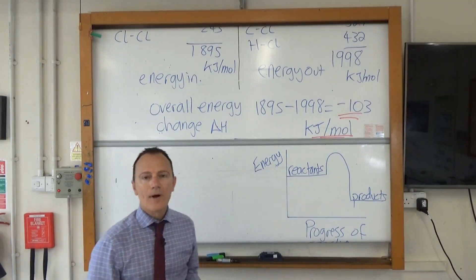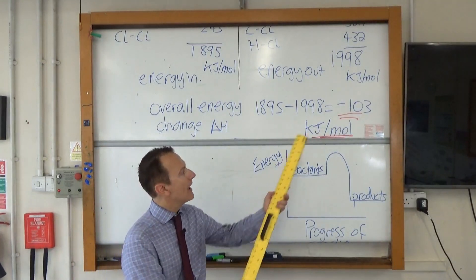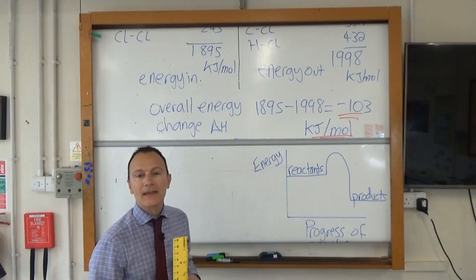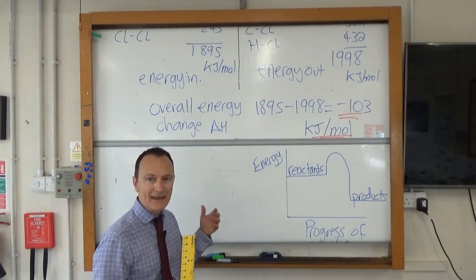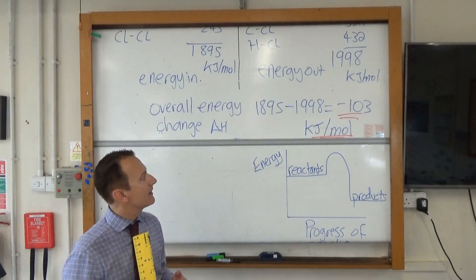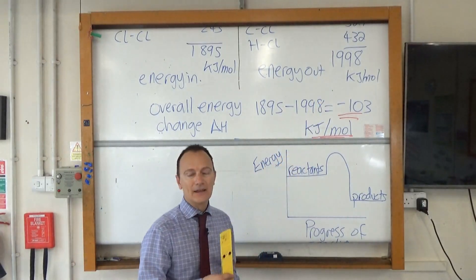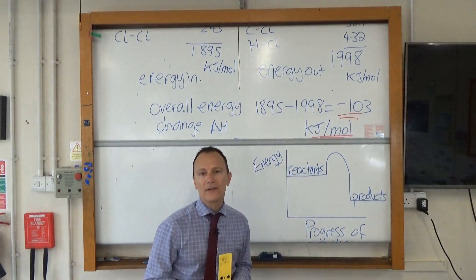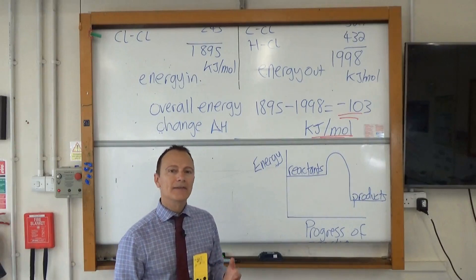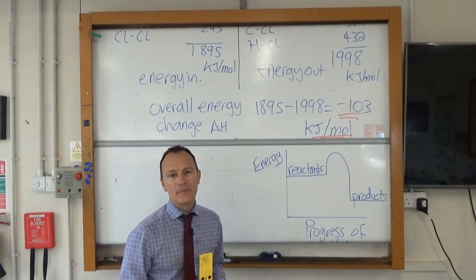I also wanted to explain why we've ended up with a negative number for our overall energy change. That's because we put 1,895 kilojoules per mole of energy in to break the bonds, but when new bonds were formed and energy was given out, it released more energy — 1,998 kilojoules per mole. So overall it's an exothermic reaction. An exam question might say: explain using bond energies why it's an exothermic reaction.